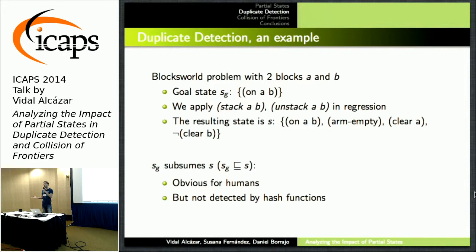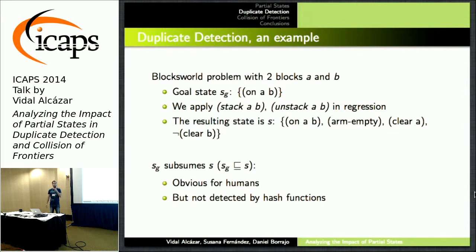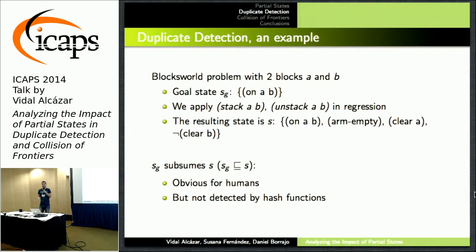Think of a blocks world problem with only two blocks. The goal is on A, B. Then you stack — which in regression is unstacking — and then you unstack it. Departing from a state in which you only have on A, B, that's the only thing you know, you get to a state with more stuff. But it is the same thing, right? You do something and then you undo it, so it doesn't really make sense to expand another such search tree whose root may be that new state. Humans can easily see that, but hash functions can't.